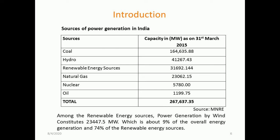Among the renewable energy sources, power generation by wind constitutes 23,447.5 MW. Out of the total 31,692 MW of renewable energy, wind constitutes almost 23,447.5 MW, which is almost 9% of the overall generation and 74% of the renewable energy sources.